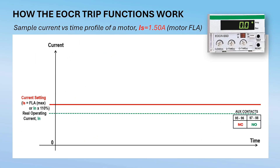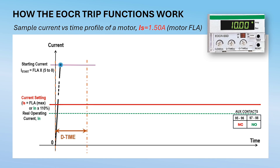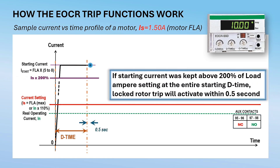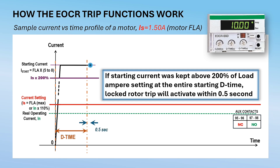Locked rotor trip function: when starting a motor from a complete stop, the motor draws a high starting current. If the motor starting current is kept equal to or above 200 percent of the overcurrent ampere trip setting for the entire delay time or D-time, the locked rotor trip will activate within 0.5 seconds.